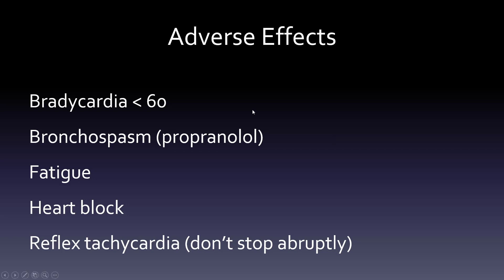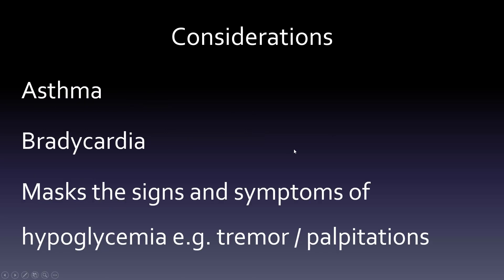Considerations come from the adverse effects. Be mindful of patients with asthma or COPD — if they need a beta blocker, don't choose first generation. If someone has bradycardia, you don't want to reduce their heart rate further. A big one: beta blockers can mask the signs and symptoms of hypoglycemia. Normally a hypoglycemic patient gets jittery with palpitations, but with a beta blocker they may not feel that at all and slip into a hypoglycemic state without warning.